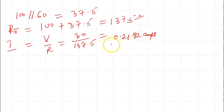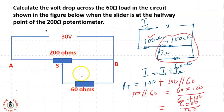Now if the current is 0.218 amps, we're interested in the voltage drop across 60 ohms. That will be the voltage drop across this combination. The voltage drop across the 60 ohm is the same voltage drop across this combination - it's a parallel circuit.